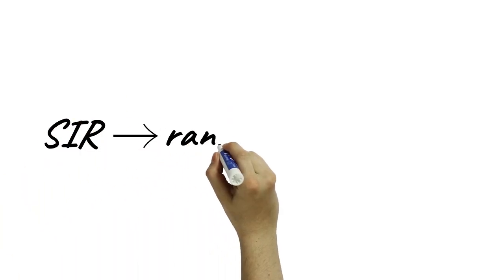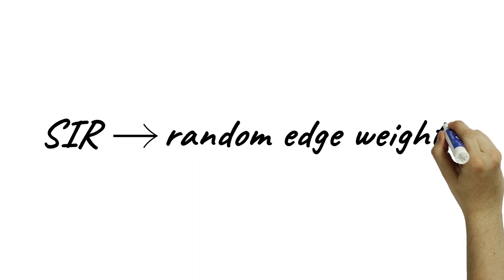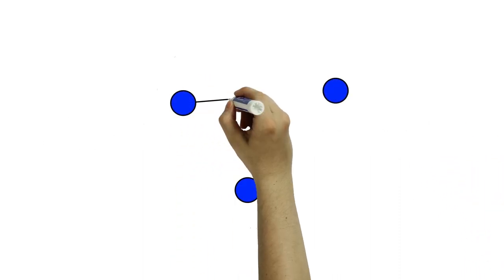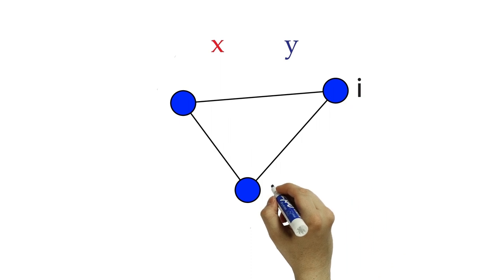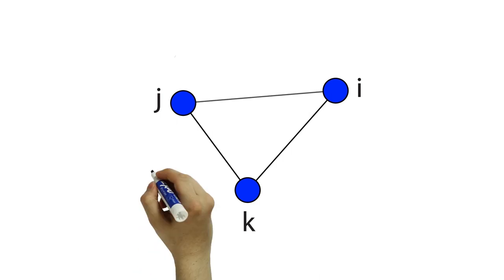Our framework maps the SIR dynamics to random edge weights. For every edge, we generate two random numbers between 0 and 1, denoted as XY, and assign the weight rho to the edge according to the following formula.